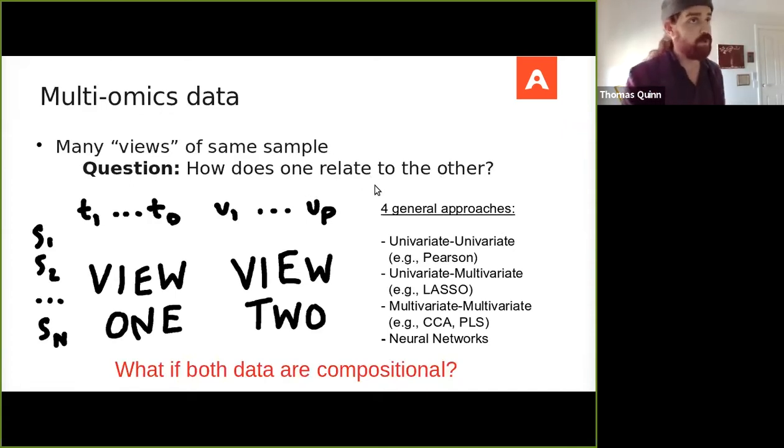Now, in general, I see four approaches to answering this question. You can use a univariate univariate method where you take one column from the first data, and you compare it with one column from the second data. And let's say you use a correlation to see how they vary with one another. You can use univariate multivariate methods where you take one column from the one data set, and you predict that as a function of all of the variables of the second data set. And you might use something like a penalized linear regression for this, a lasso.